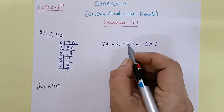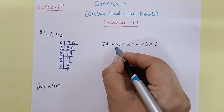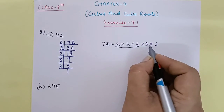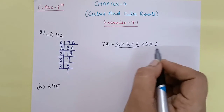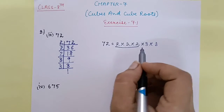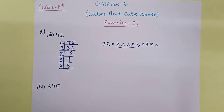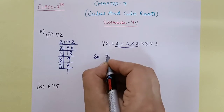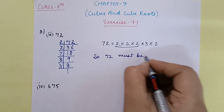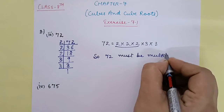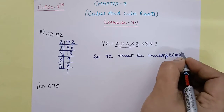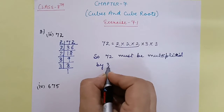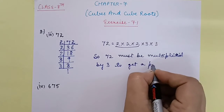Now students, we will do grouping of 3. We make a group of three 2s — that's complete. But how many 3s do we have? Only 2. I need one more 3 for the group to be complete. It means we will multiply 72 by 3. So 72 must be multiplied by 3 to get a perfect cube.